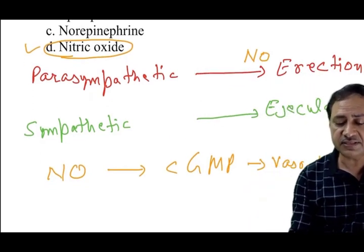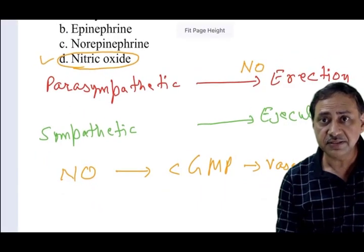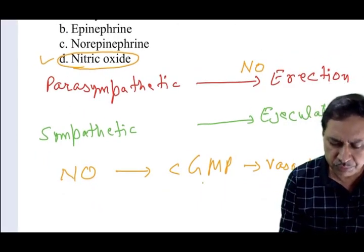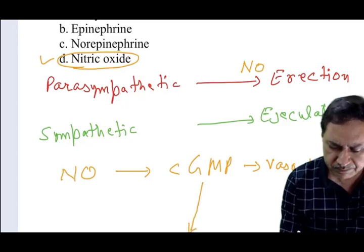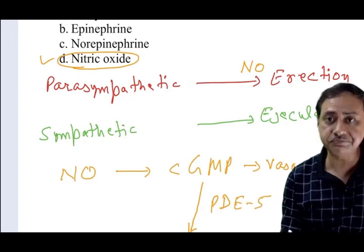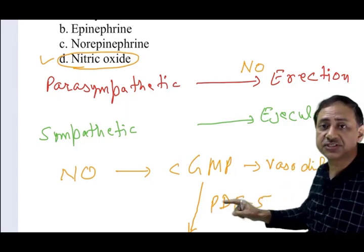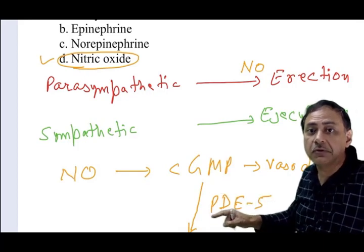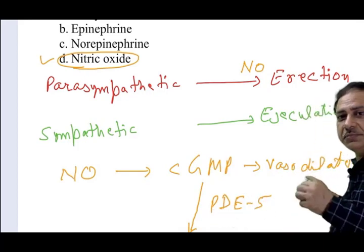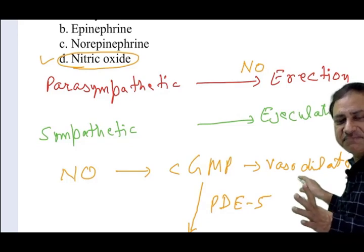This cyclic GMP will be broken down by Phosphodiesterase V. Phosphodiesterase V will break it down. So this vasodilation will subside and erection will be inhibited.